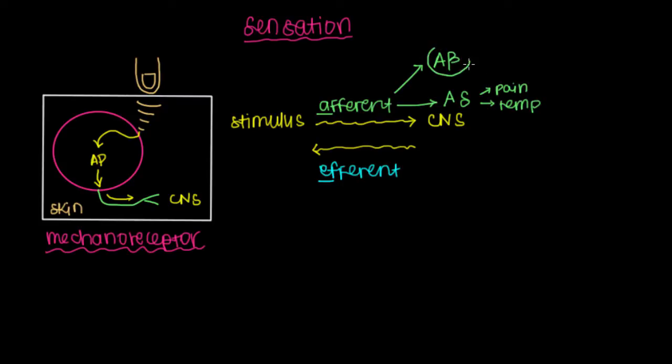The A-beta fibers perceive everything else. So these are going to be the afferent fibers we talk about for all the mechanoreceptors in this video. There's a separate video that talks about the A-delta nerve fiber.